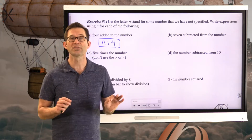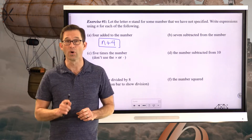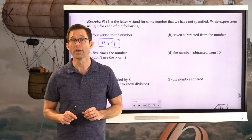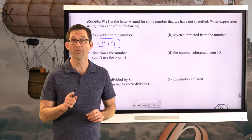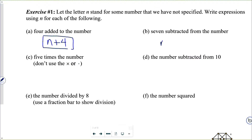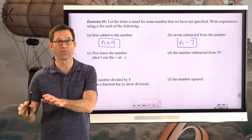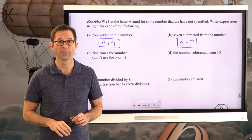Letter B: seven subtracted from the number. Here it makes a difference — we must have N minus 7. If we write 7 minus N, that is very different, because then that's N subtracted from the number seven.